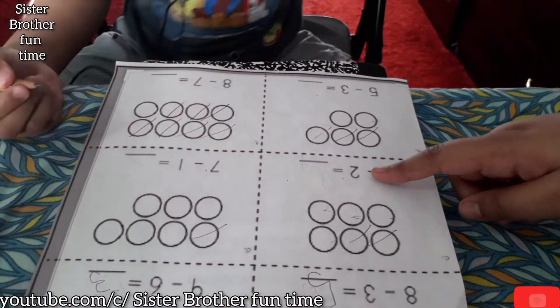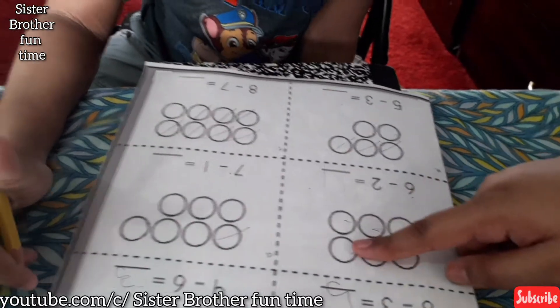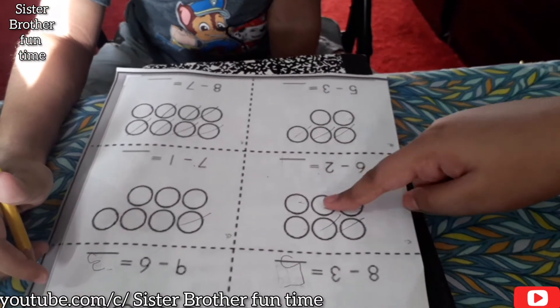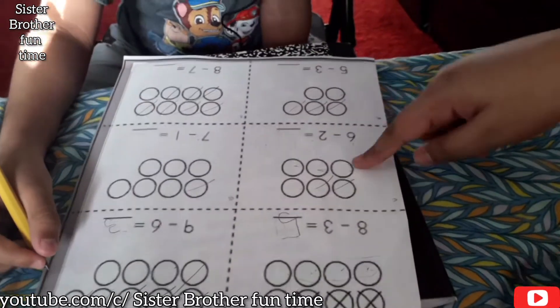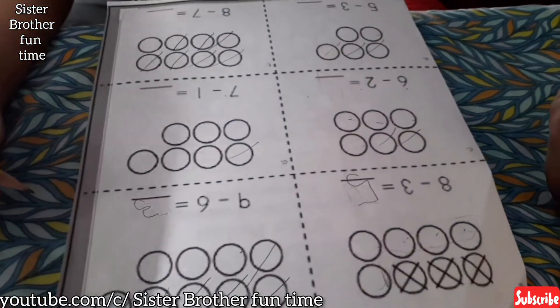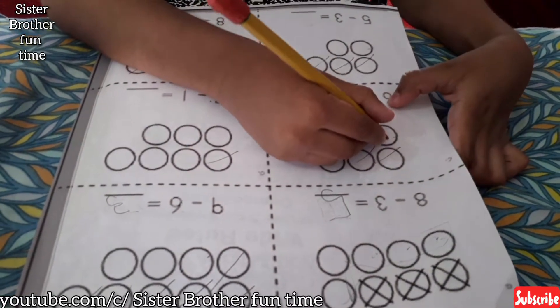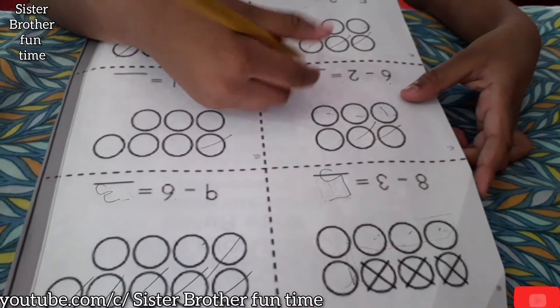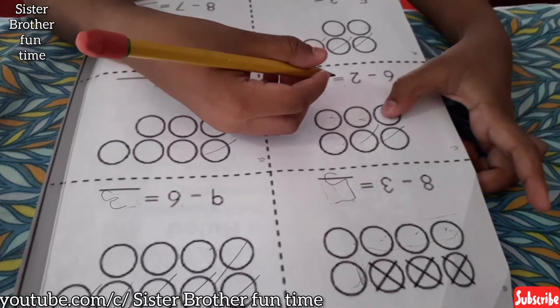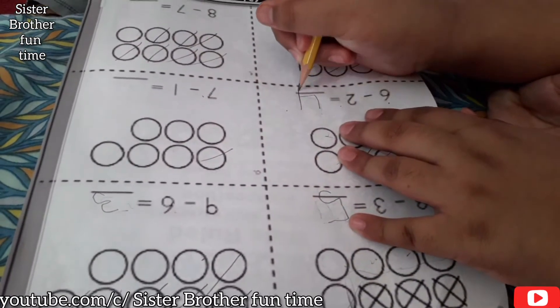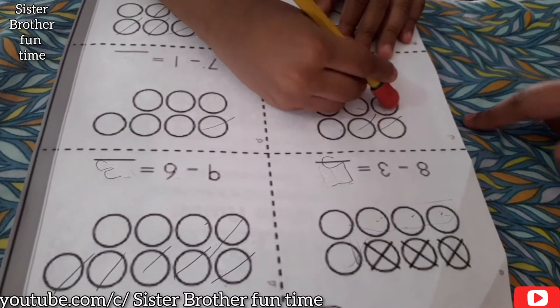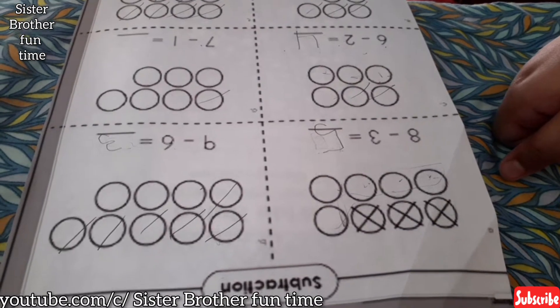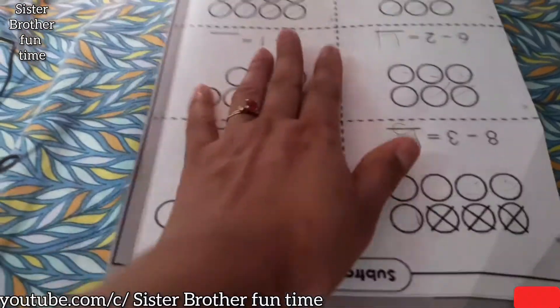Six minus two. Count: one, two, three, four. There's one more circle — one, two, three, four. So four. Put four. Put a nice four — just put the line. Six minus two equals? Four. Okay, good.